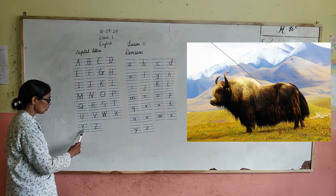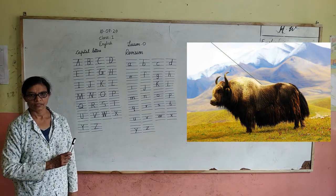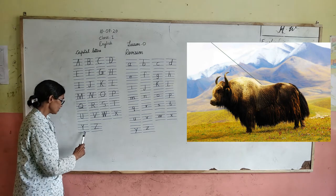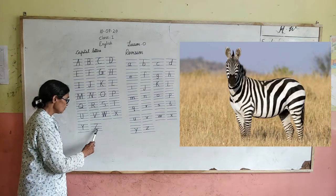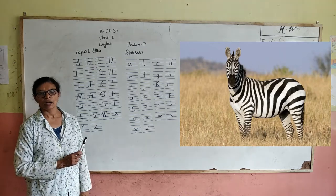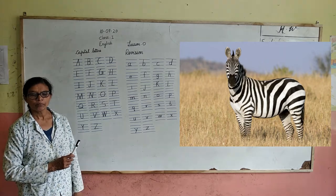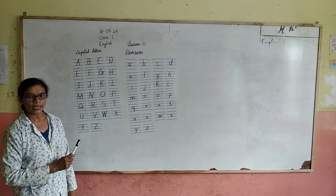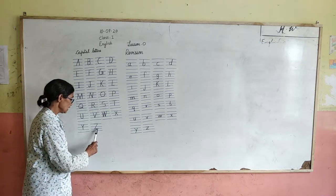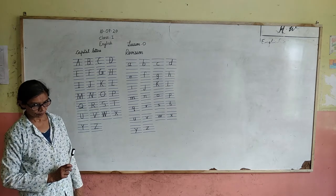Y for yak — Y-A-K, yak. Z for zebra — Z-E-B-R-A, zebra.